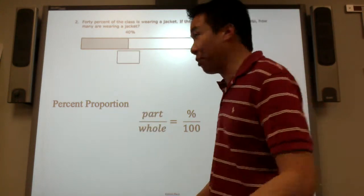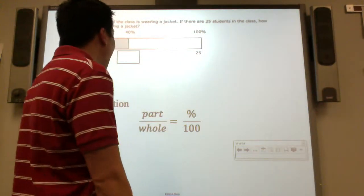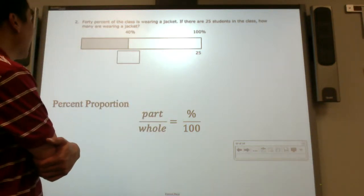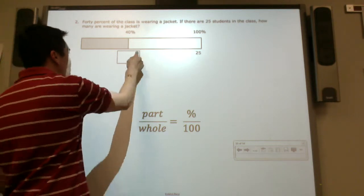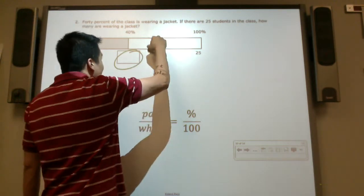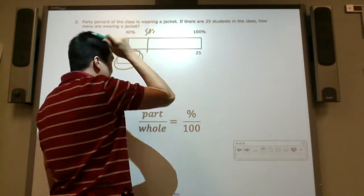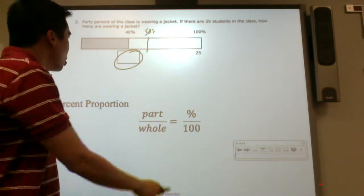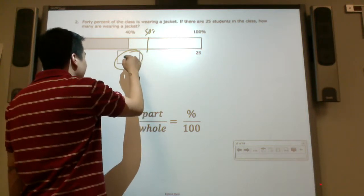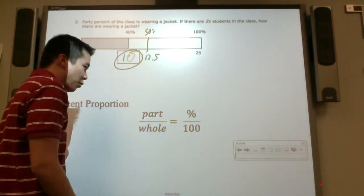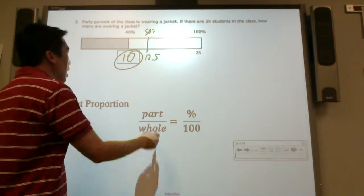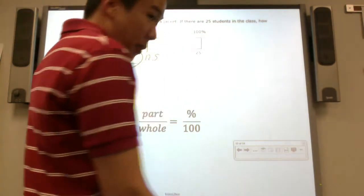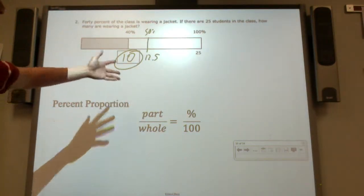I'll try one more. Here's the last one, I promise. 40% of the class is wearing a jacket. If there are 25 students in the class, how many are wearing a jacket? What would this one be? If I had to guess, 50% is right here, that would be 12.5. Of course, it doesn't make sense, you can't have 12.5 students. This one, I would have to say 10. I would say 10 students if I had to take a guess. Maybe 9, maybe 8, maybe 11. I just don't know yet.